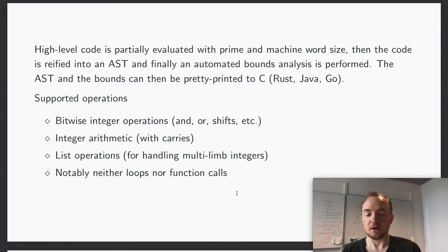So how does it work? You write some high level code in Coq which is partially evaluated when you give it the prime that you wish to generate arithmetic for. Then this is reified into an AST which can be printed to C, and then you get competitive code.